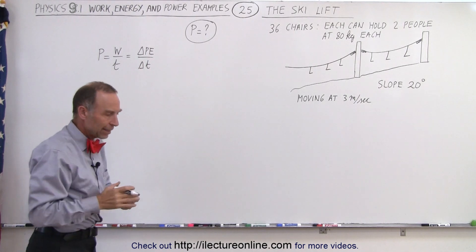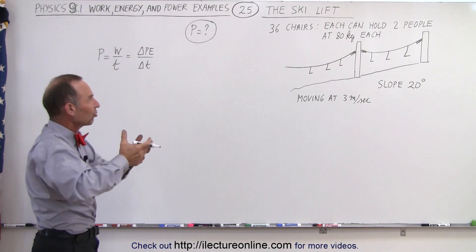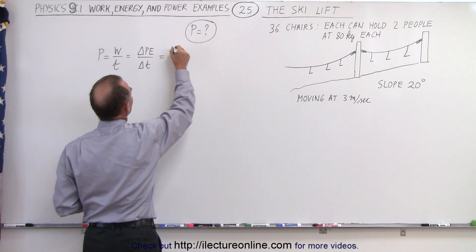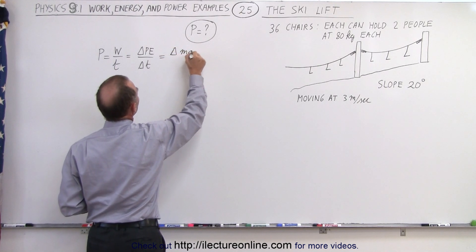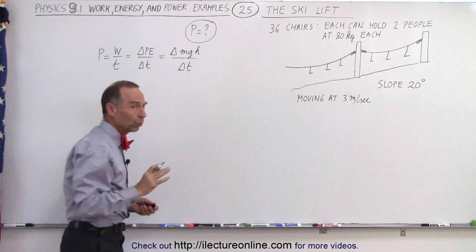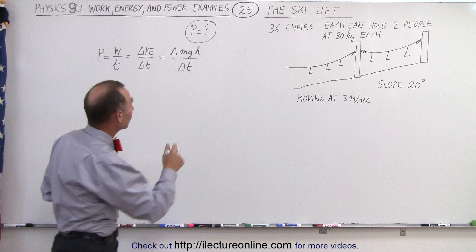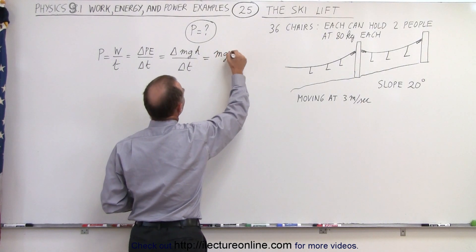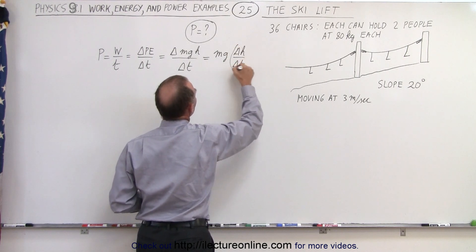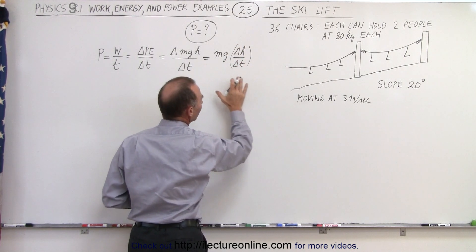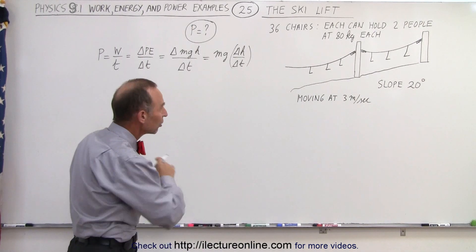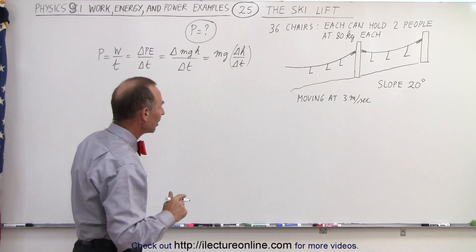So it's the work done to increase the potential energy of the skiers. And potential energy is by definition equal to mgh divided by the amount of time that it takes. And realizing that m and g are constant, so this can be written as mg times the change in the height over time. And so what we need to do now is figure out how that relates to the speed at which the skiers will go up the hill using the ski lift.